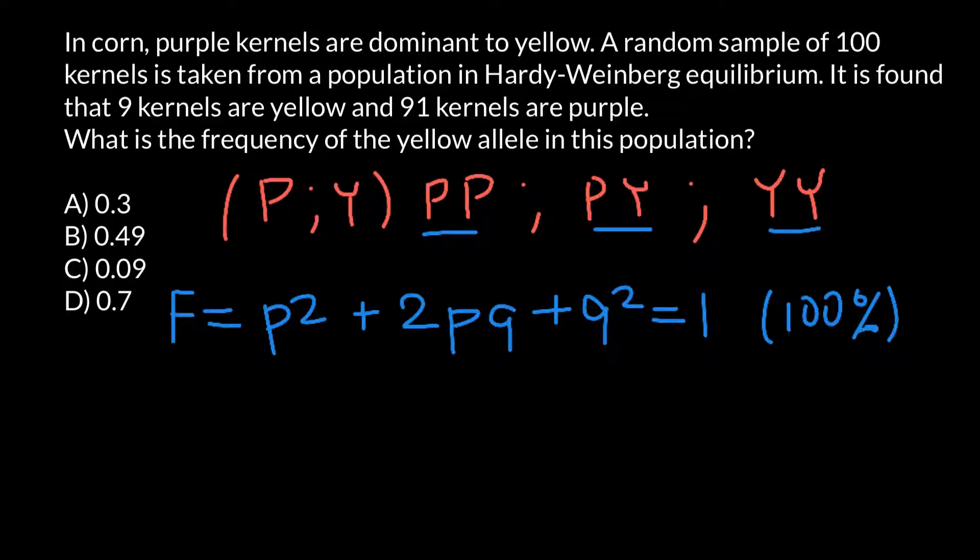We know that nine kernels are yellow and 91 are purple. As you see, the problem is simplified because we have 100 kernels and it is easy to calculate.